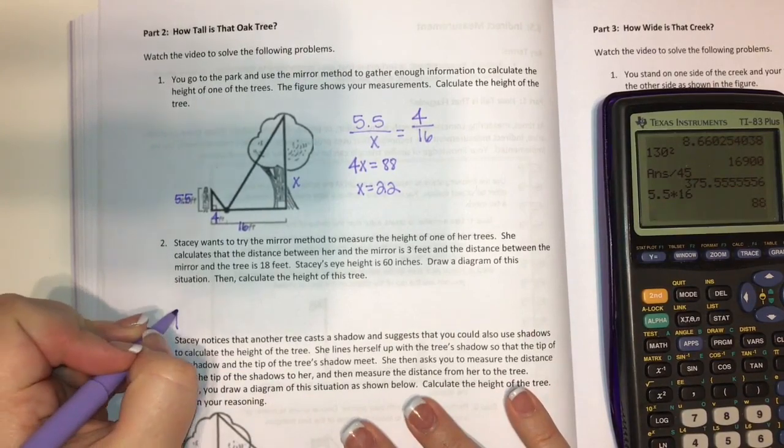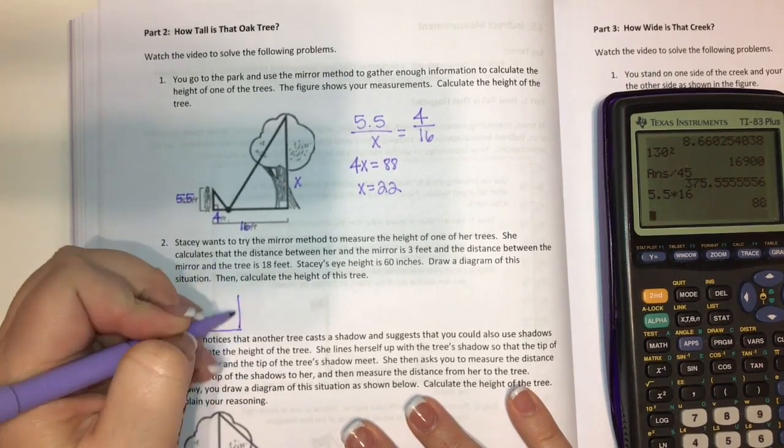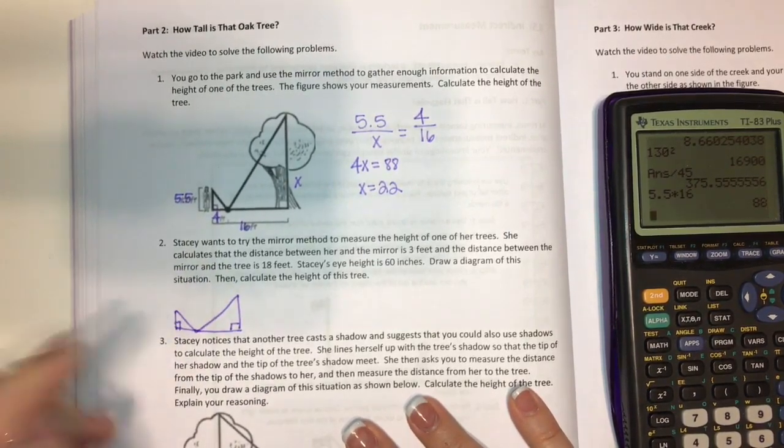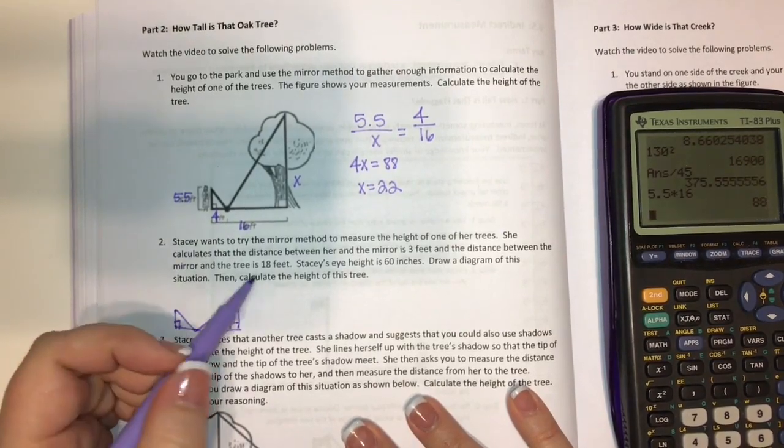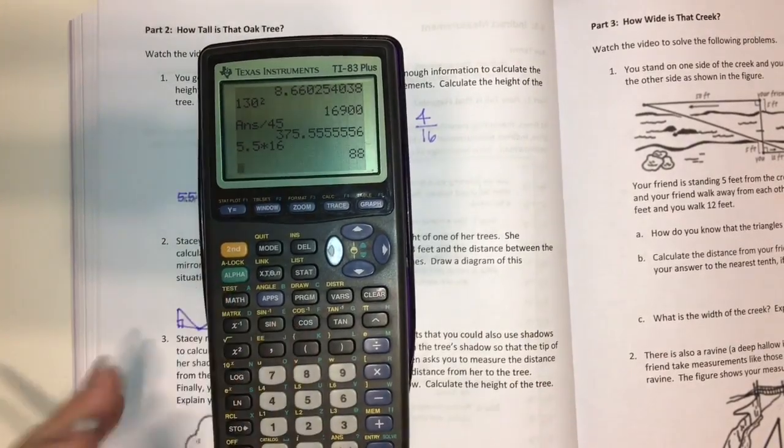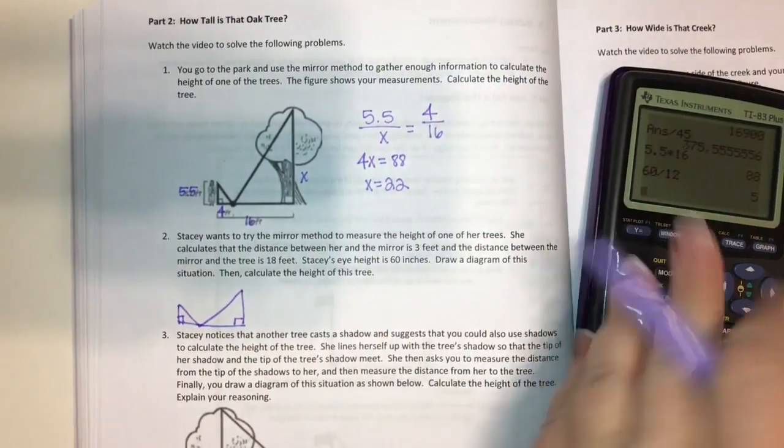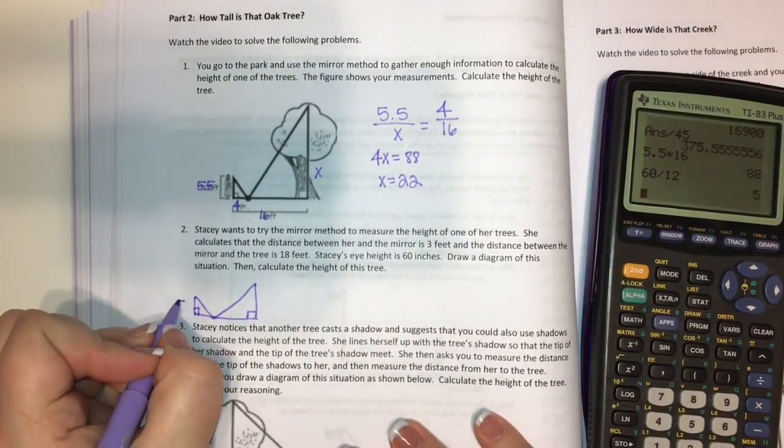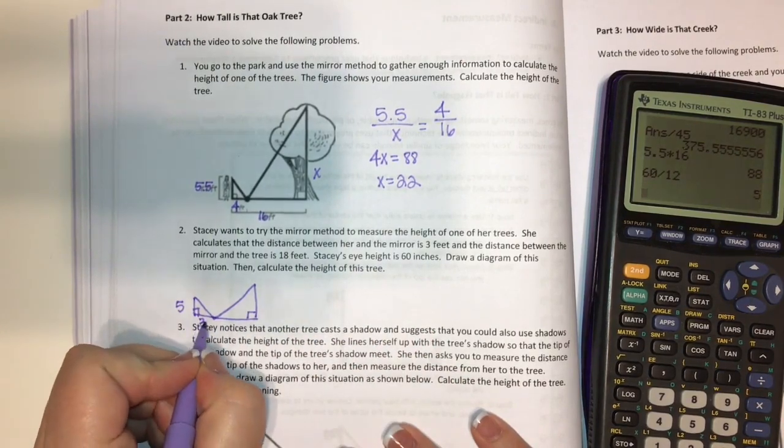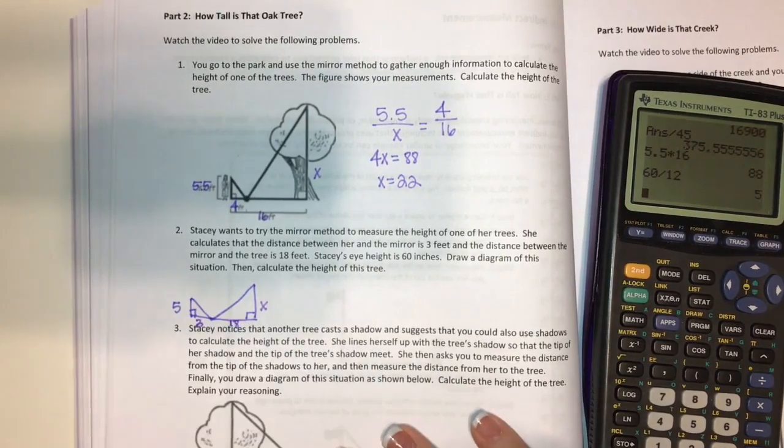So first of all, we're going to draw Stacy. And you don't have to actually draw a picture of a tree and a picture of a person. We can just draw the two triangles. Obviously the shorter one is Stacy. So Stacy is 60 inches. Let's go ahead and convert that to feet. There are 12 inches in a foot. So we can just divide 60 by 12 and we can find out that Stacy's eye height is five feet. Now it says she is three feet from the mirror and the tree is 18 feet from the mirror and so I'm looking for the height of the tree.